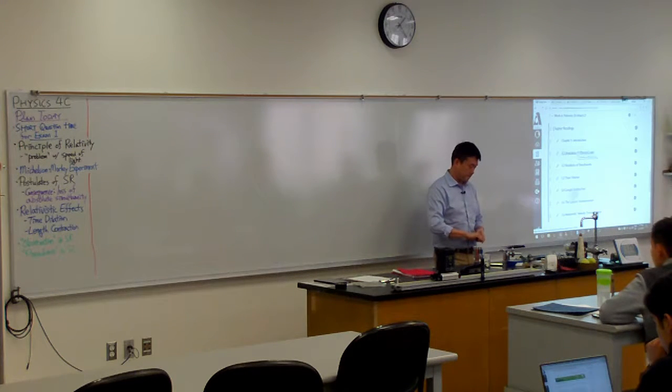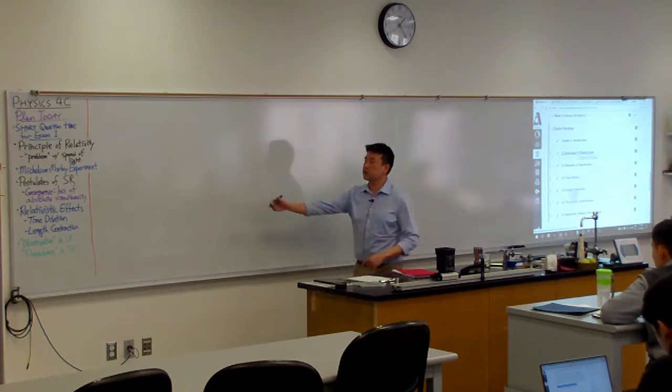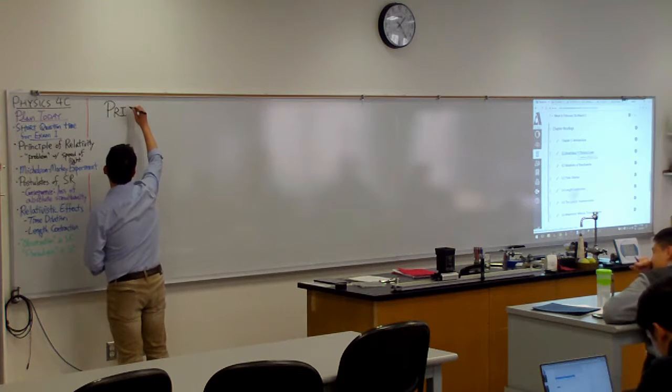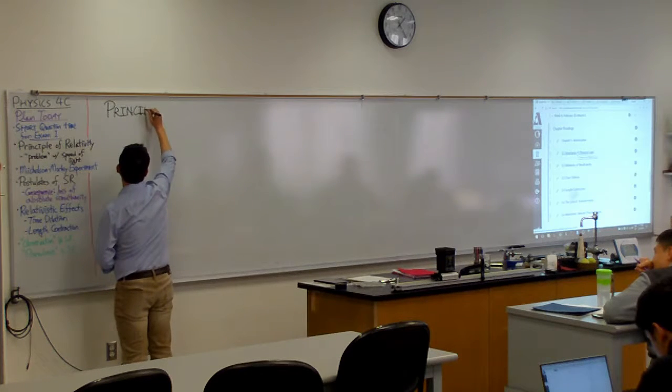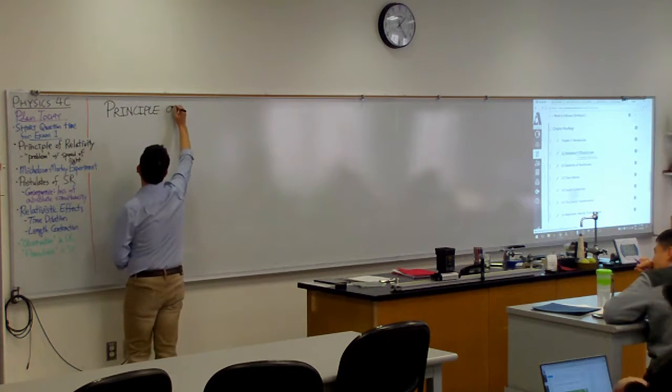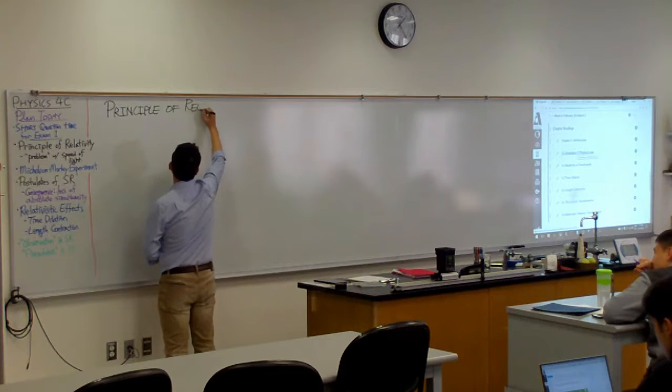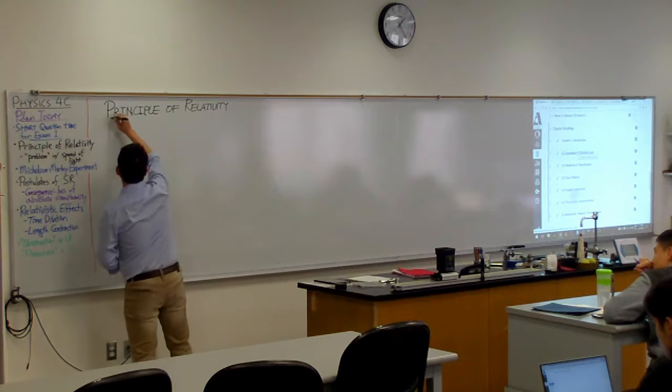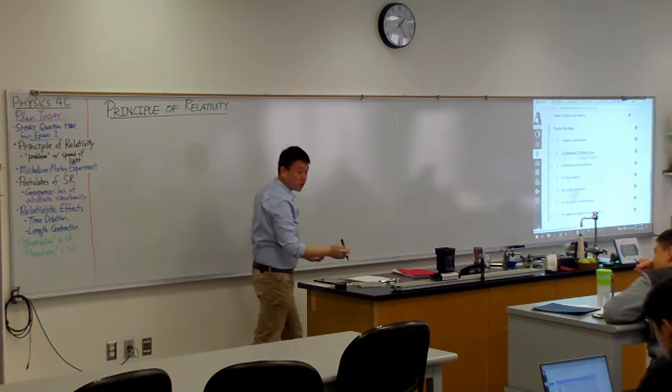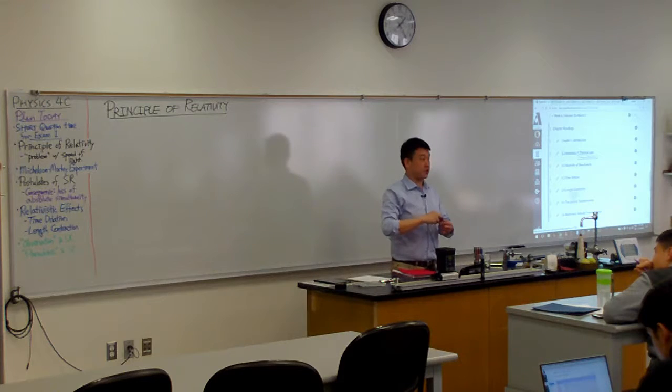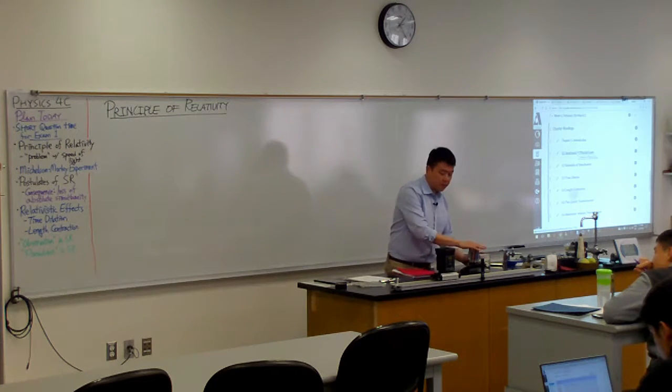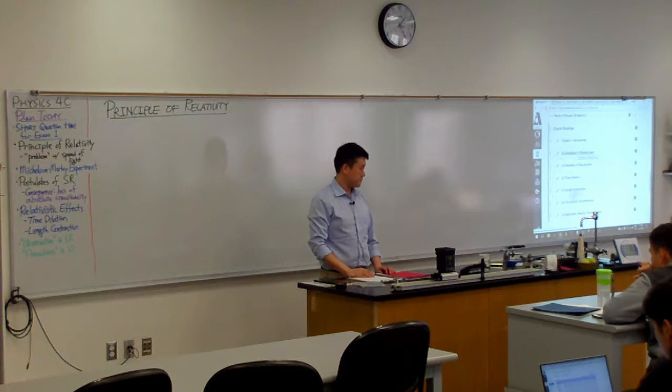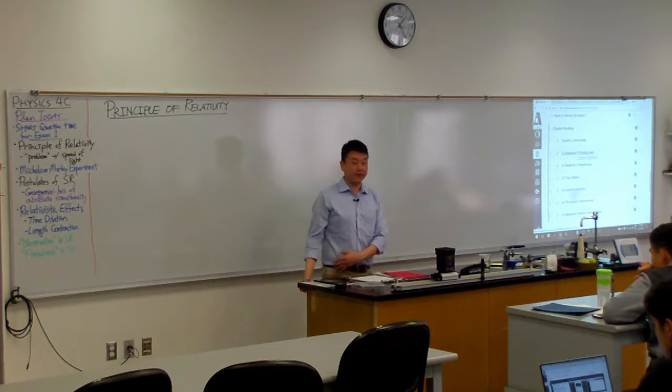So it gets some, it falls under the heading of Principle of Relativity. And it's not actually a new principle. Depending on your instructor, they might have even mentioned it in Physics 4A. And it's something you can actually reason through. What's the quickest way to do it? I can give you the scenario that Galileo thought of.